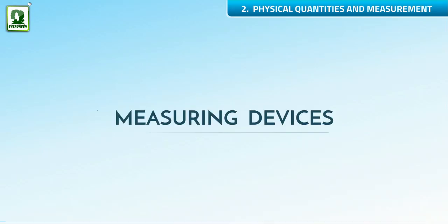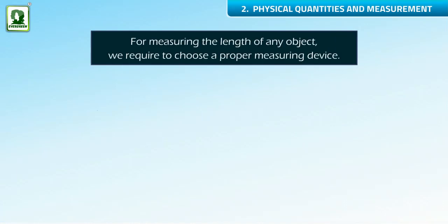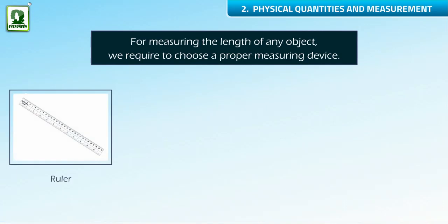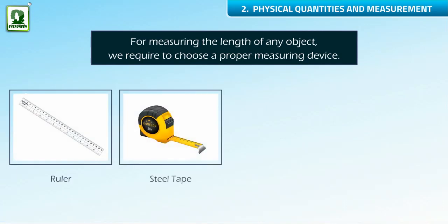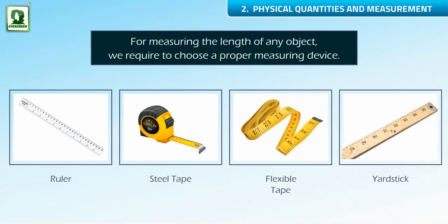Measuring devices. For measuring the length of any object, we require to choose a proper measuring device, for example, a ruler, steel tape, flexible tape, and yardstick.